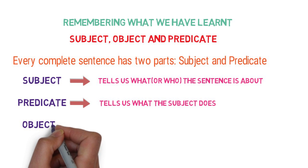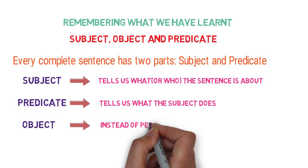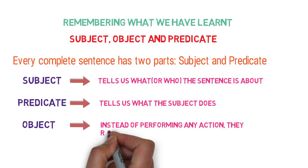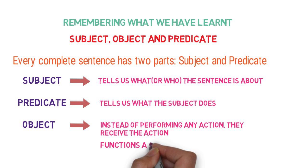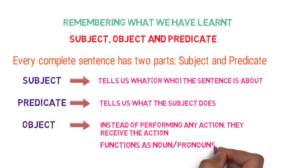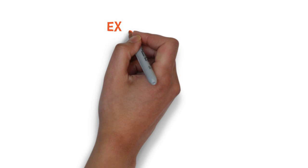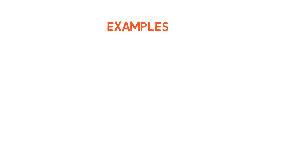And what is an object then? Instead of performing any action, they receive the action. They are followed by a verb and they function as a noun or pronoun. Let's look into the example to make things clear. Compare the example with the definition of subject, predicate, and object.